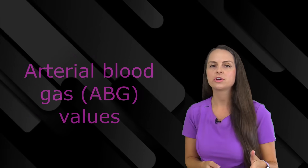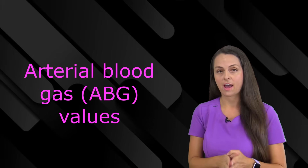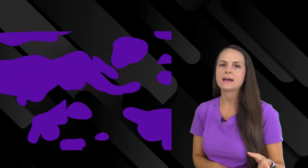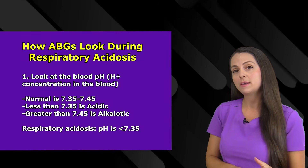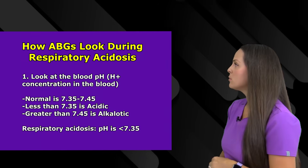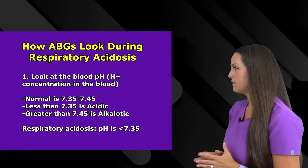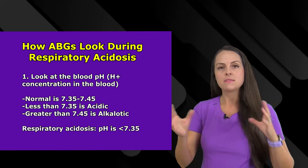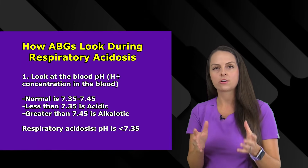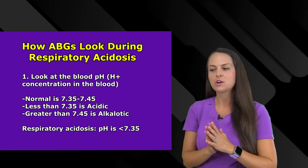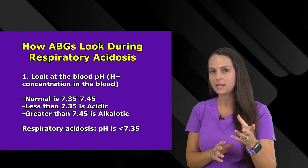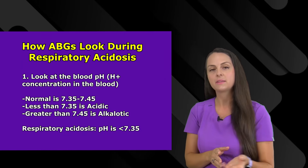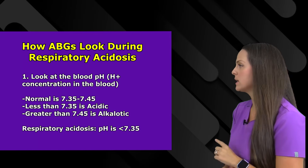Now let's talk about how you can know if your patient is experiencing respiratory acidosis. One big way is to look at the arterial blood gas values. When talking about respiratory acidosis, the first thing you want to look at is that blood pH — normal is 7.35 to 7.45, which is the measurement of hydrogen ion concentration in the blood. So we have a very acidic blood level — the blood pH in respiratory acidosis is going to be less than 7.35.